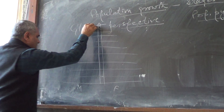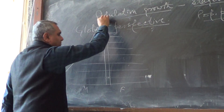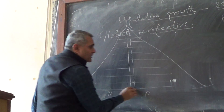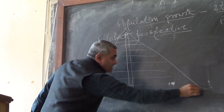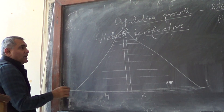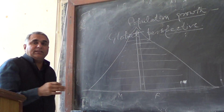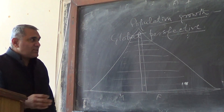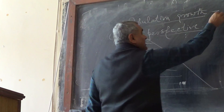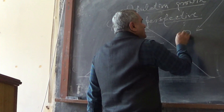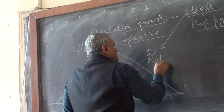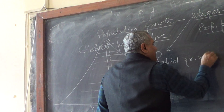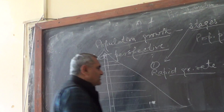Sometimes it looks like this — when the base is large and the top is very weak. In such a condition, this is known as the first stage of population, called Rapid Population Growth.